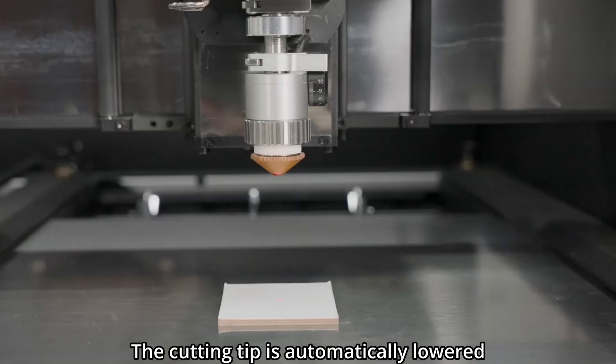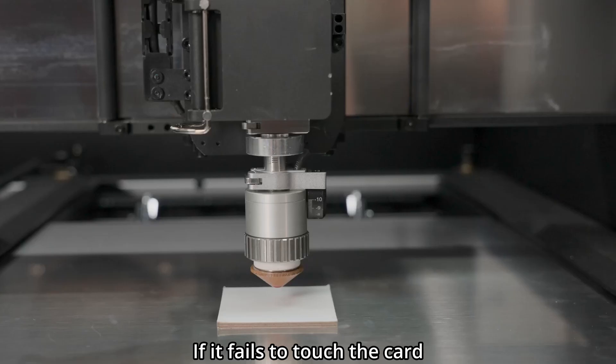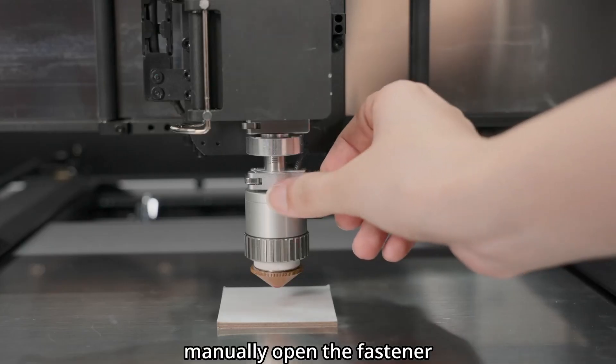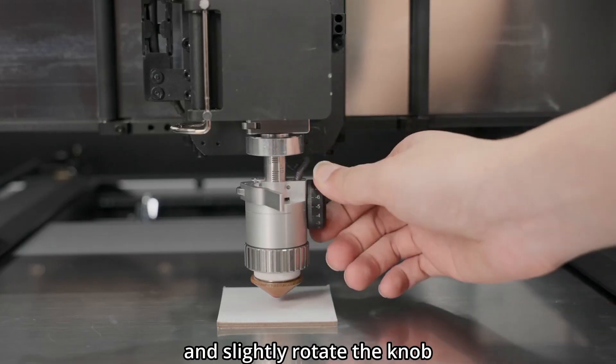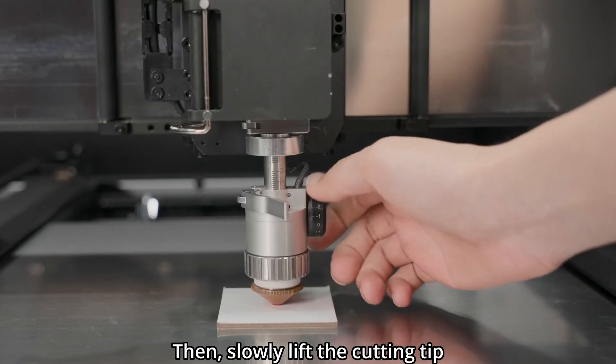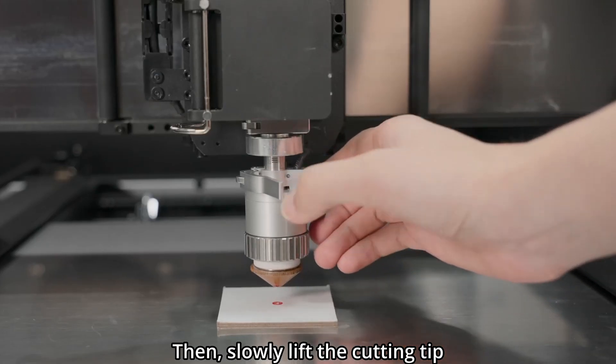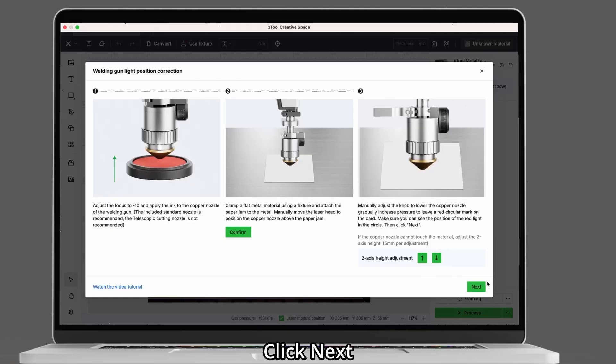The cutting tip is automatically lowered. If it fails to touch the card, manually open the fastener and slightly rotate the knob until the red mark is left on the card. Then, slowly lift the cutting tip and close the fastener. Click Next.